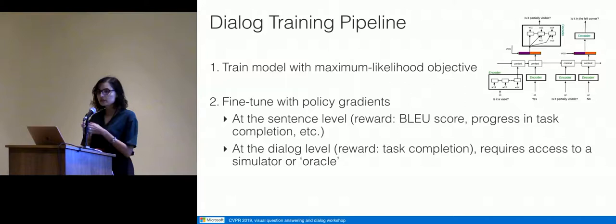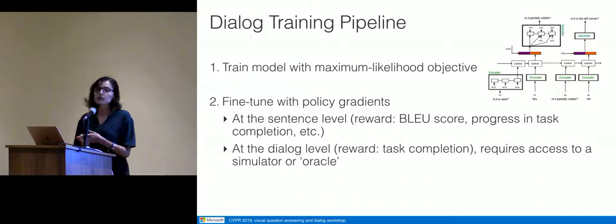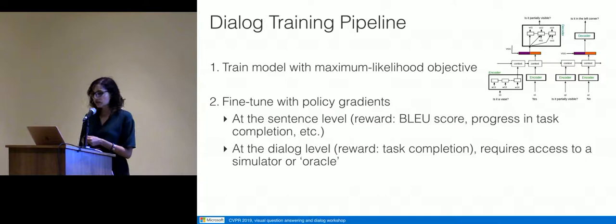To correct exposure bias, people have started using policy gradient training. After learning to imitate the expert, you let your model decode utterances and give it feedback — similar to reinforcement learning. You output a sequence of words as your actions, get feedback as a reward at the end, and back-propagate this feedback through your model. You can do this either at the sentence level or at the dialogue level.